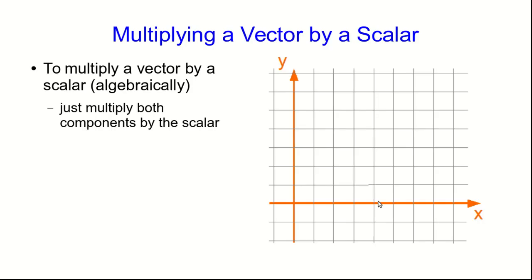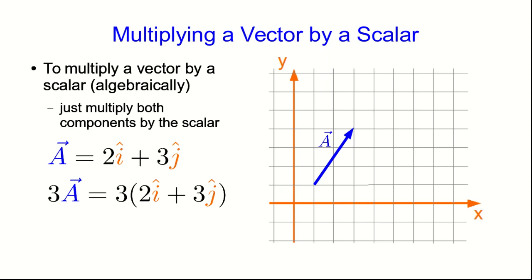Multiplying a vector by a scalar algebraically is even easier than adding. You just multiply both components by the scalar. So, for example, if we start with this vector a, and we multiply it by 3, we're just going to multiply the x component by 3 to get 6, and the y component by 3 to get 9, and, as we expect from our graphical intuition about this process, we get a vector that points in the same direction as the original one, and is three times as long.